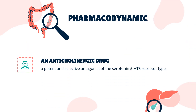Pharmacodynamics: Alosetron is a potent and selective antagonist of the serotonin 5-HT3 receptor type. Activation of these receptors and the resulting neuronal depolarization affects the regulation of visceral pain, colonic transit, and GI secretions — processes that are related to IBS. By blocking these receptors, alosetron is able to effectively control IBS.